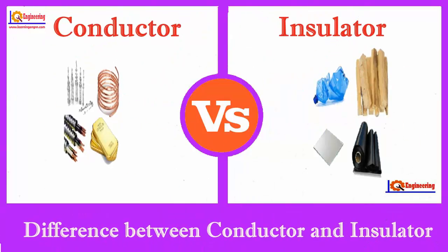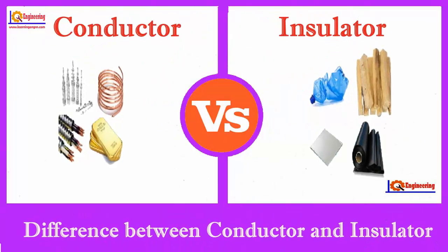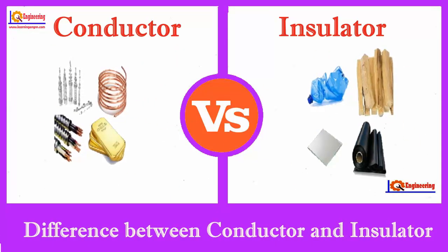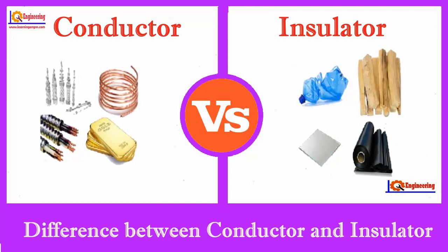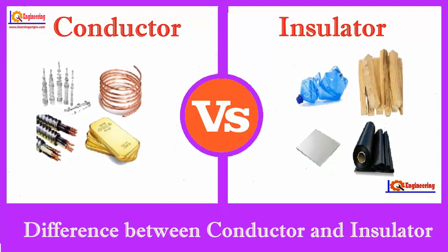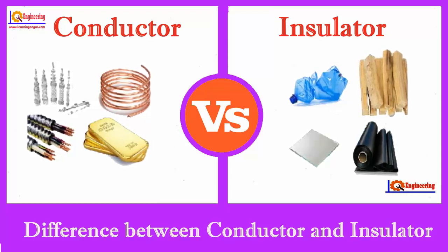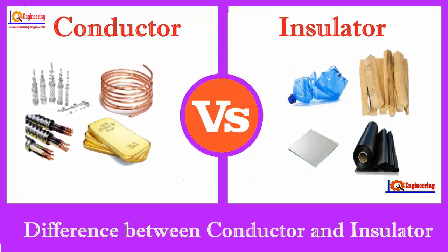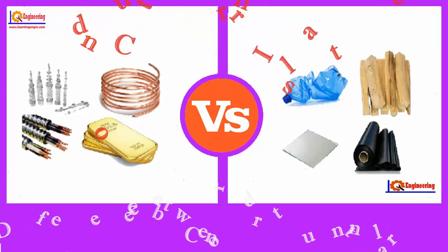Conductor and insulator are terms that describe whether a given material has properties favorable for conducting electricity or heat. The main difference between conductor and insulator is that a conductor conducts electricity or heat well, whereas an insulator conducts electricity or heat poorly.